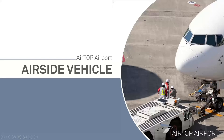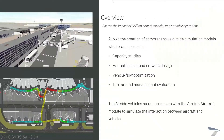The airside vehicle module has to be connected with the airside aircraft module to simulate the interaction between the aircraft and vehicles. You can use this second module to assess the impact of ground support equipment on airport capacity and optimize your operations. With this module you can make capacity studies.